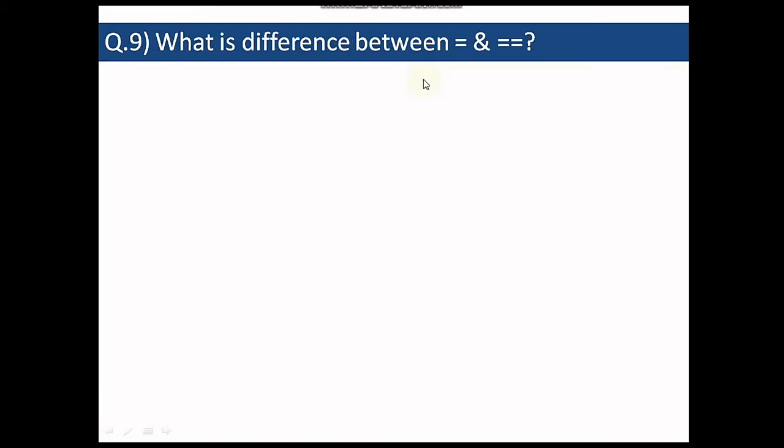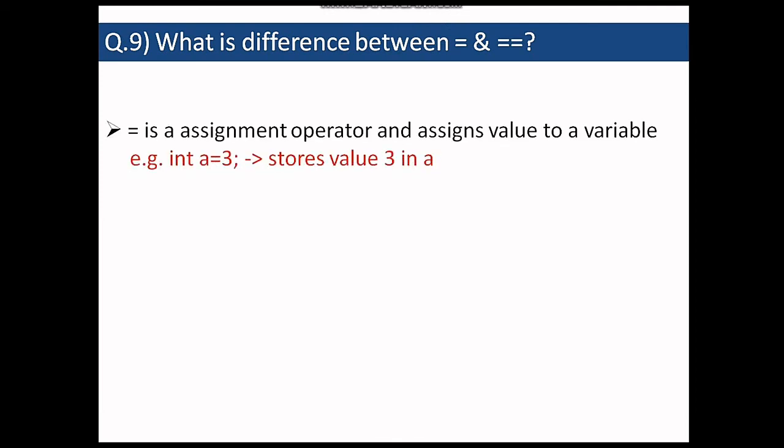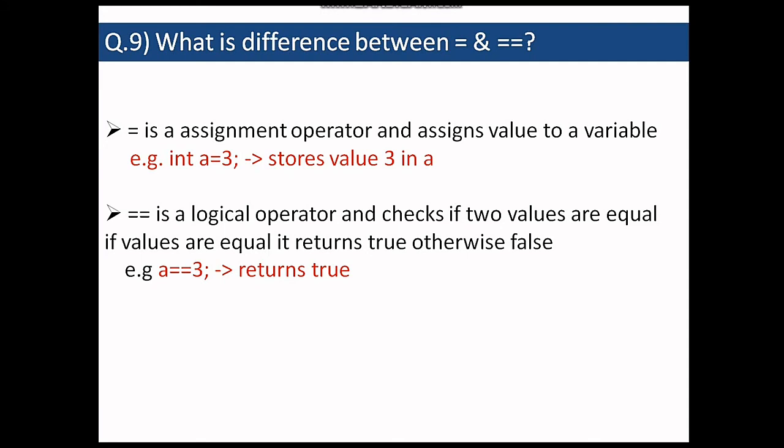So the next question is what is the difference between a single equal to sign and a double equal to sign. A single equal to sign is an assignment operator and it assigns a value to a variable. So when we say int a equal to 3, value of 3 is stored in a variable a. But double equal to sign is a logical operator and it checks if the two values are equal. If the values are equal it returns true, otherwise false. So this is the difference.